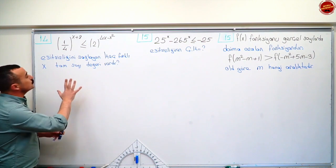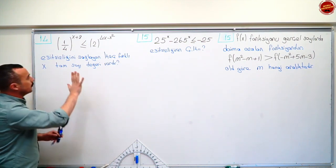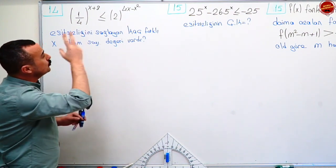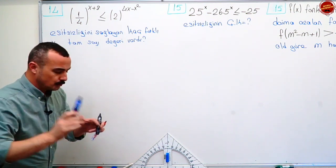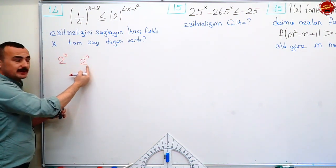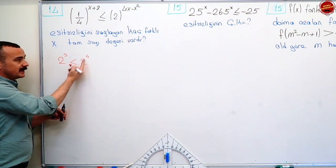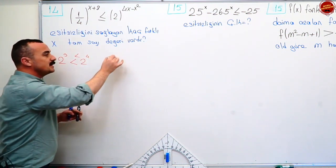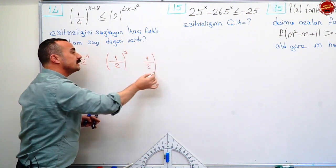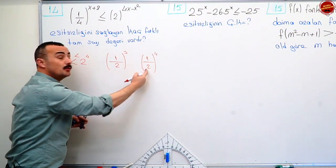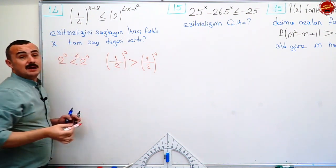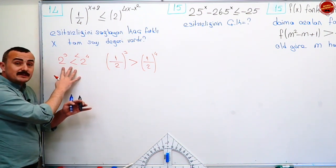Evet şimdi on dördüncü sorumuz. Karşımıza farklı tipte gelebilecek sorular var, dikkat edin. Üstü eşitsizlikler. Üstü sayılarda buna değinmiştik ama tekrar geçelim. İkinci dereceden üstü eşitsizliğe bakalım. Mesela iki üzeri üç mü büyüktür, iki üzeri dört mü? İki üzeri dört daha büyüktür. Yani taban bileşikse üstü büyük olan daha büyüktür. Bir bölü iki üzeri üç mü büyüktür, bir bölü iki üzeri dört mü? Bu bir bölü sekiz, bu bir bölü on altı. Sekiz parçaya ayırdığım durum daha büyük.